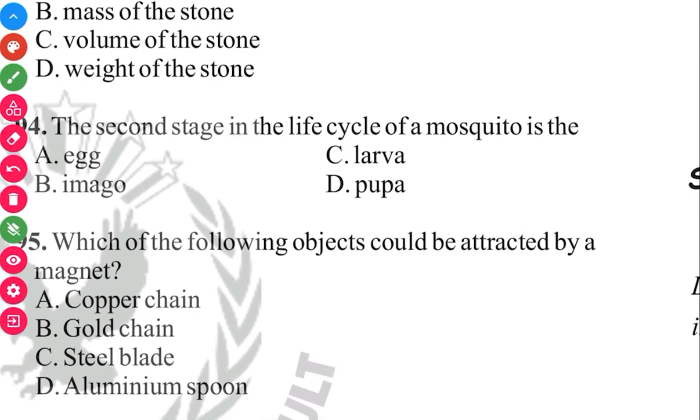Question 95. Which of the following objects can be attracted by a magnet? Answer in 3, 2, 1, C, steel blade.